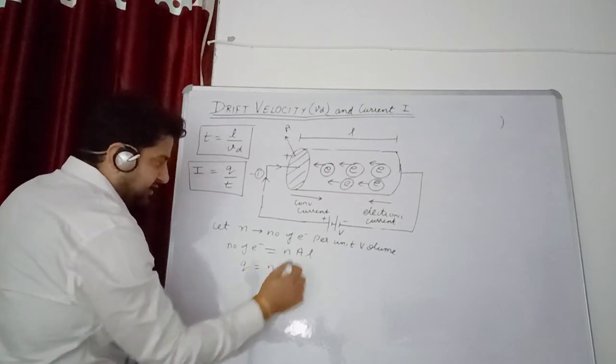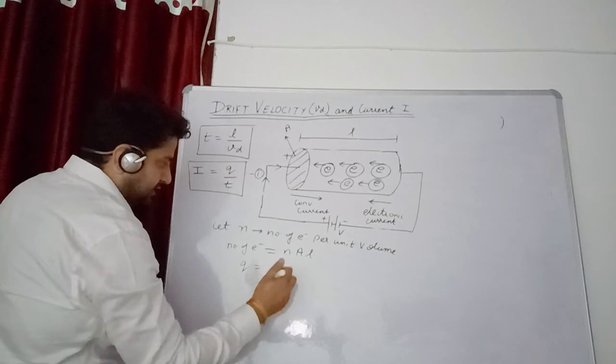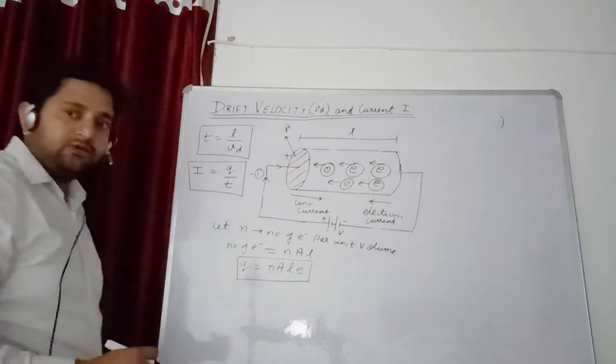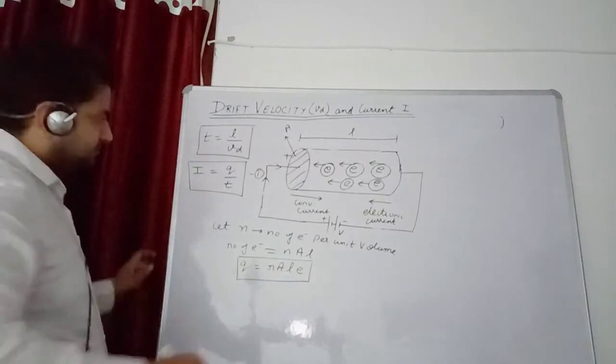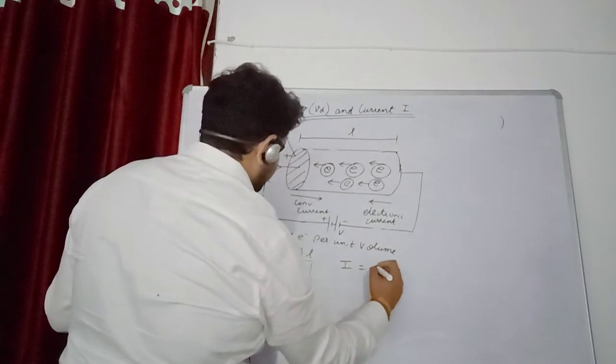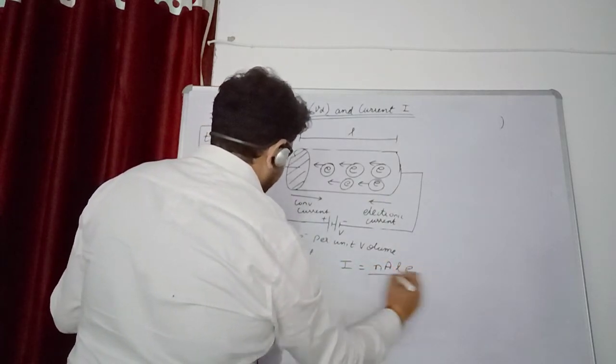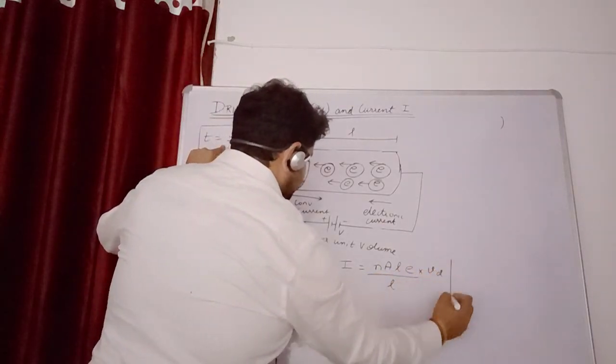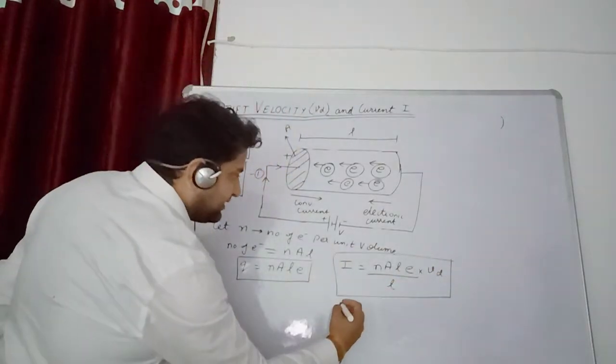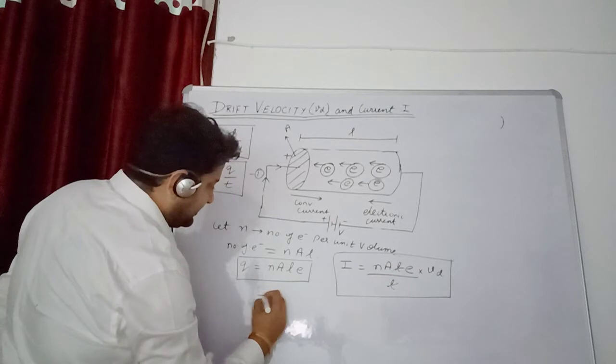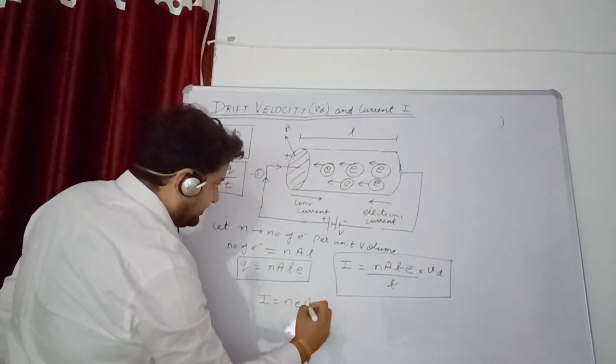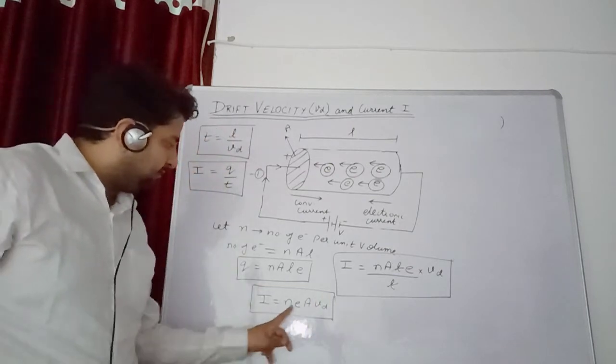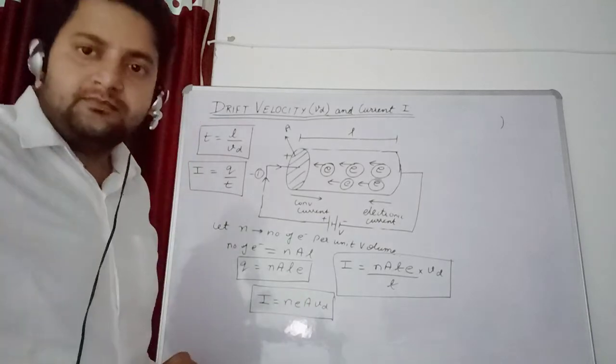Now charge. So current formula becomes: Q is N A L into E upon T. Time is L upon vd. So L cancels out. I will be equals to N E A vd. So this is the required relation between current and drift velocity.